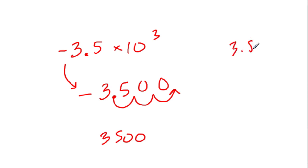If we had 3.5 times 10 to the third, we would go through the same process except without the negative sign. So the only difference is that in this case, we always bring that negative sign down. We have negative 3,500 before we had positive 3,500.